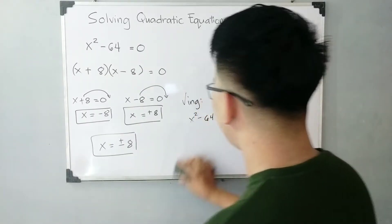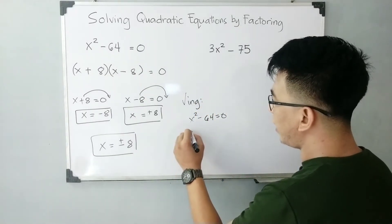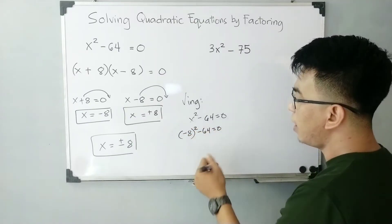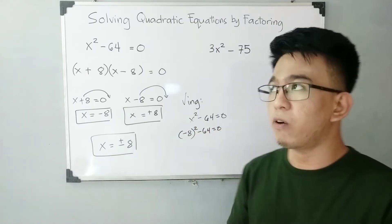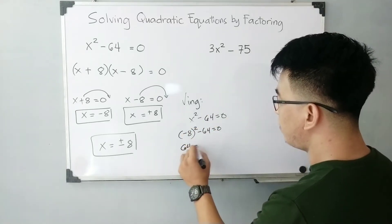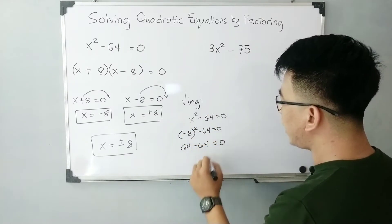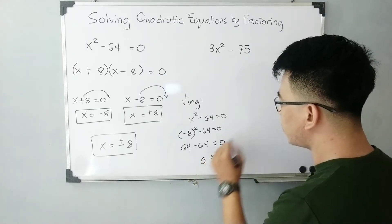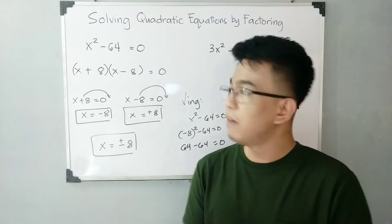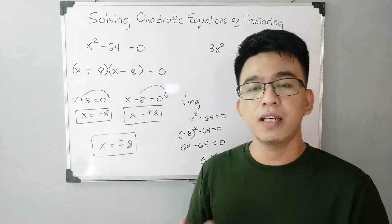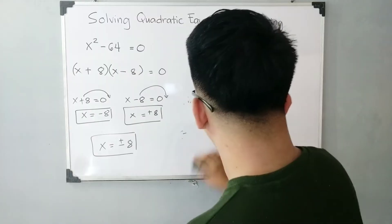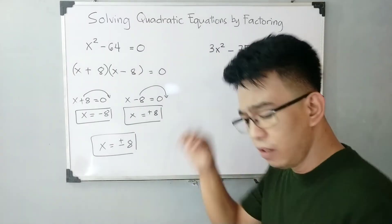How about negative 8? Let's try using negative 8 as the value of x. We have negative 8 raised to the second power minus 64 is equal to zero. Negative 8 times negative 8, or negative 8 squared, is 64. So 64 minus 64 leads to zero equals zero. Definitely, the values of x for number 1 are 8 and negative 8.